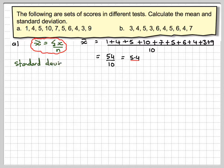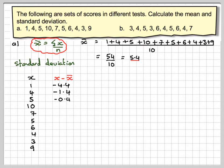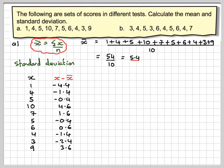If we want to calculate the standard deviation, the standard deviation is like the average of how far each thing is away from the mean. So if we make a table, we've taken these numbers and written them in a column, and we're now going to work out how far each one is away from the mean. So we're going to do 1 minus 5.4, 4 minus 5.4, 5 minus 5.4, and so on. The last one would be 9 minus 5.4, which is 3.6.